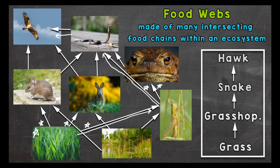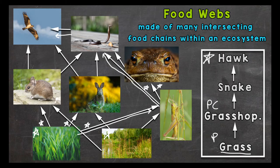The way the arrows are pointed is very important — that shows the direction the energy is traveling. So the energy from the snake is traveling to the hawk once the hawk consumes the snake. Our food chain is on the right-hand side of your screen. We started with the grass, our producer. Our primary consumer, the grasshopper, consumed the grass. Our secondary consumer, the snake, consumed the grasshopper. And our tertiary consumer, the hawk, consumed the snake.